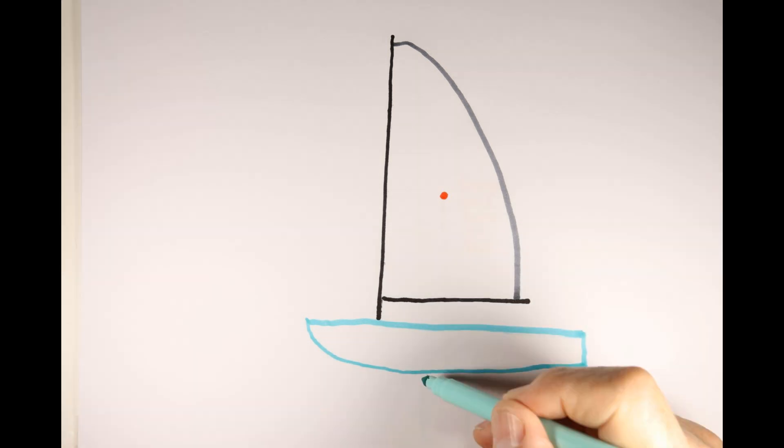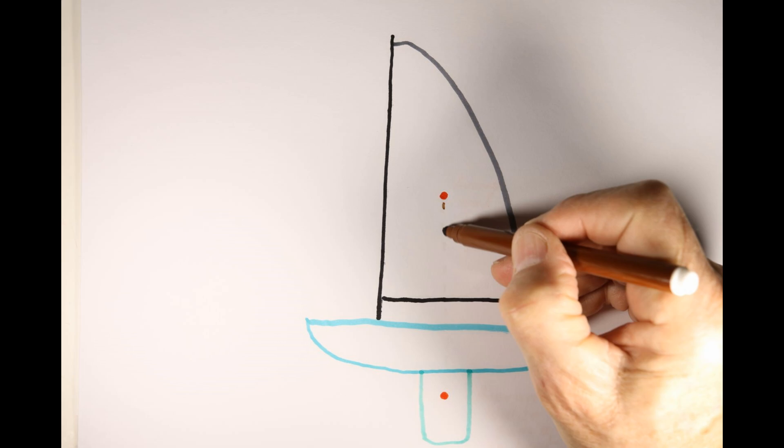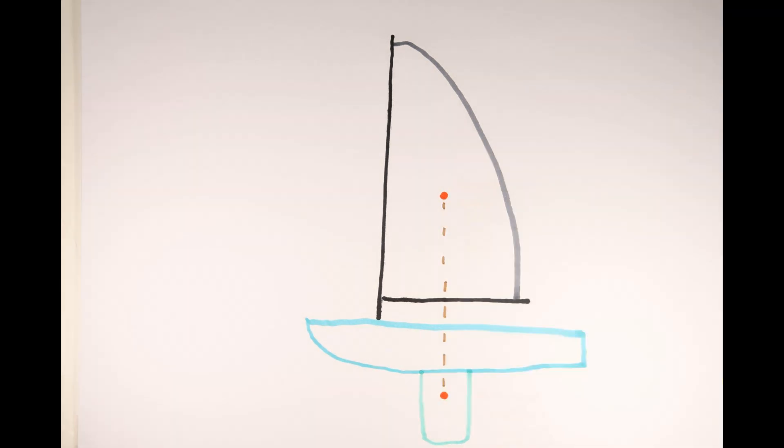These forces on the sail would push the boat downwind. To counteract this, the centreboard applies a force on the water opposing the force on the sail. This counteracting force is shown as the red dot on the centreboard.